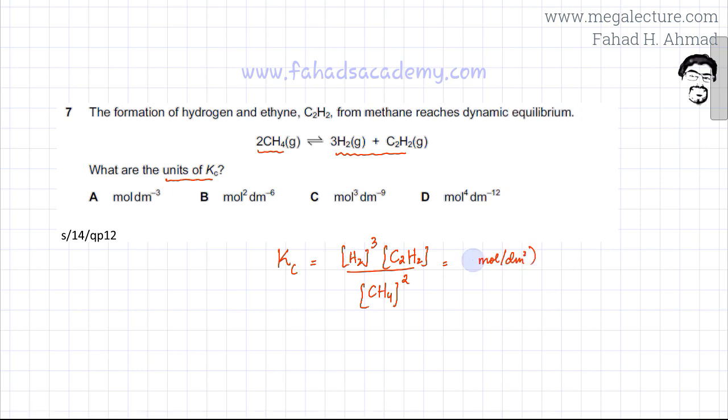This is going to be cubed because hydrogen has a power 3, multiplied by C2H2, which is mole per decimeter cube.